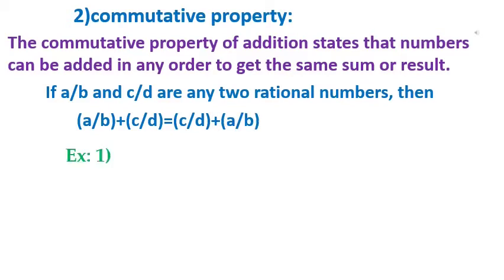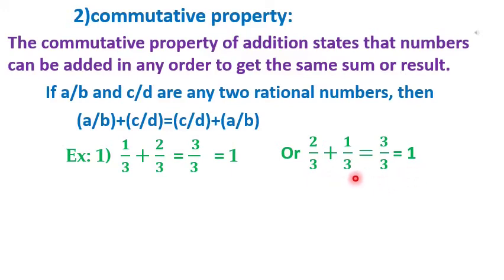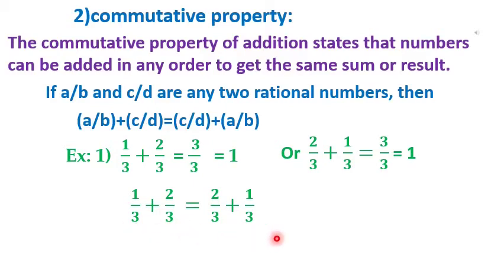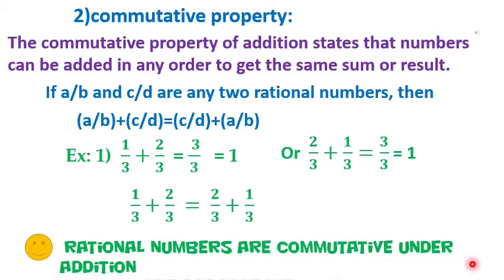For example, 1/3 plus 2/3 equals 3/3 equals 1. Now changing the order: 2/3 plus 1/3 equals 3/3 equals 1. So even if we change the order, we get the same answer: 1/3 plus 2/3 equals 2/3 plus 1/3. Therefore, rational numbers are commutative under addition.